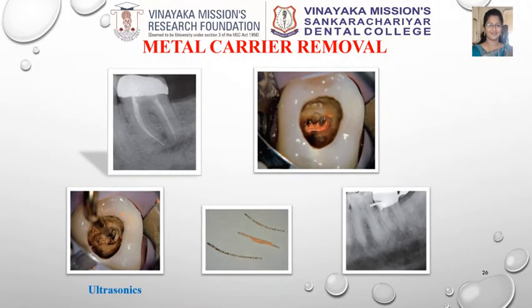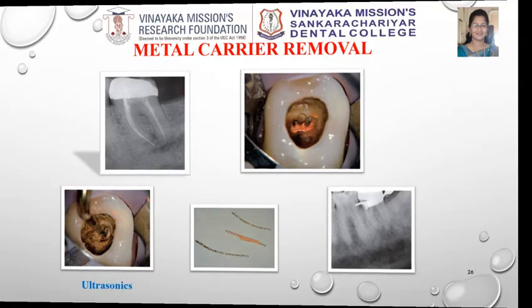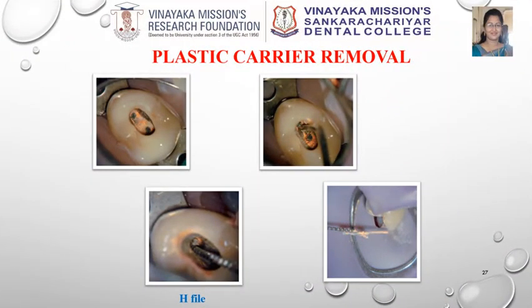Sometimes we may also encounter solid carriers in radicular restoration. The first step is to soften and remove the gutta percha around the carrier using heat or solvents. Ultrasonic troughing is done to facilitate grasping it with forceps and removal from the canal. In a similar case, gutta percha around carriers was removed. With the help of solvent, an H-file is screwed into the canal alongside the carrier and withdrawn on removal.